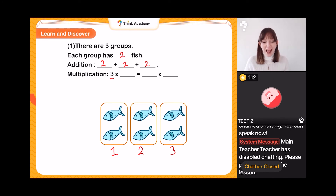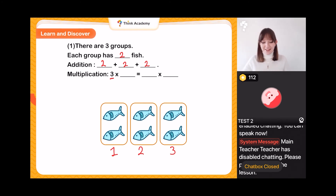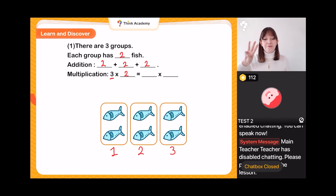We write three times, and then we times it by how many are in each group. Show me on your fingers — how many did we say were in each group? Excellent — there were two in each group! So we can write our sum as three times two. We have three groups of two fish, three lots of two.